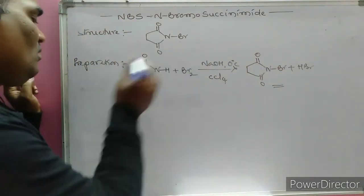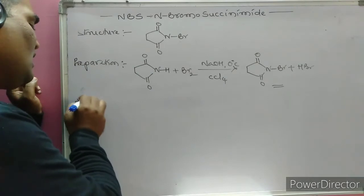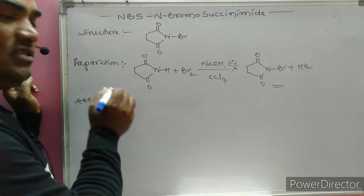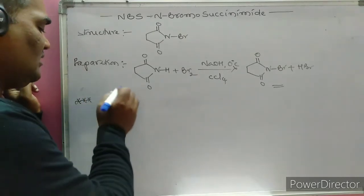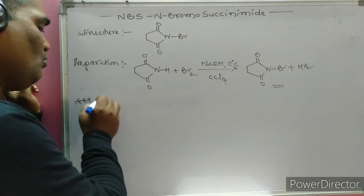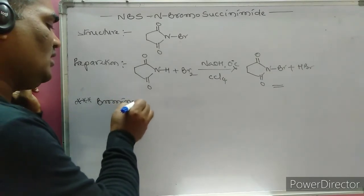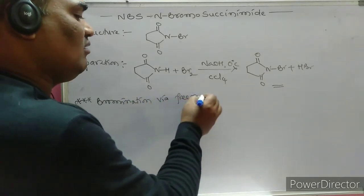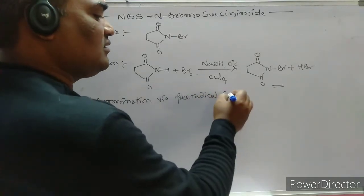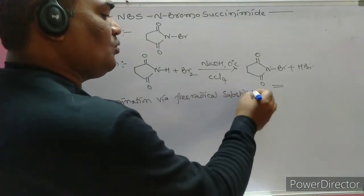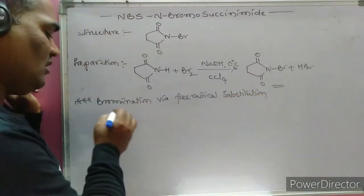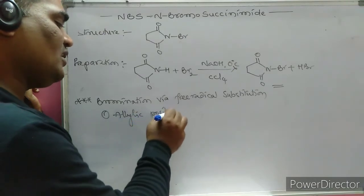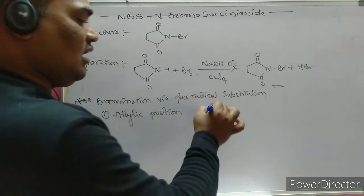The important characteristic properties of NBS: it is a valuable reagent for bromination, especially bromination via free radical substitution. The bromination occurs at two key locations — first, at the allylic position, replacing the allylic hydrogen, and second, at the benzylic position.